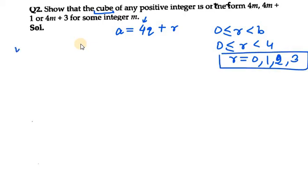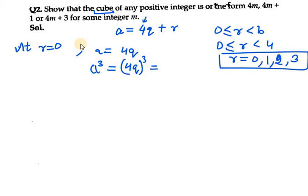At r equals 0, we have a equals 4q. Taking cube on both sides gives us (4q)³ = 64q³. We take 4 common, leaving 4 times 16q³. The bracket 16q³ can be stated as m, so the result is 4m. It is in the form of 4m.